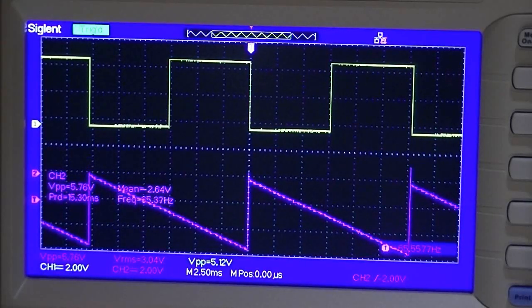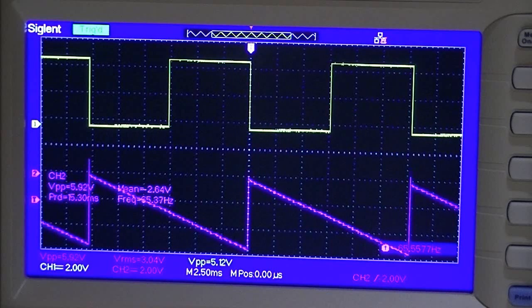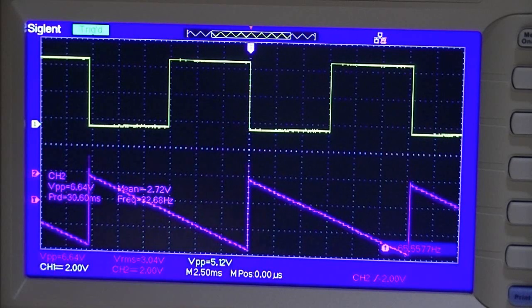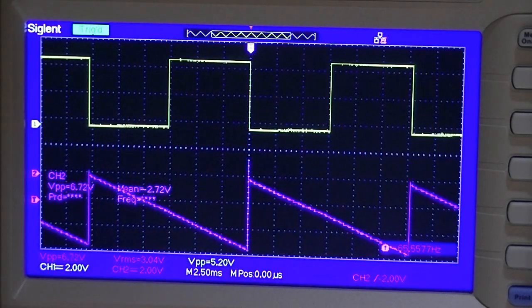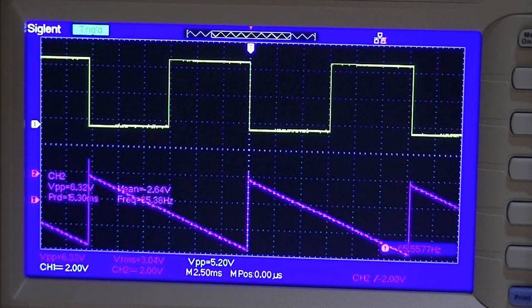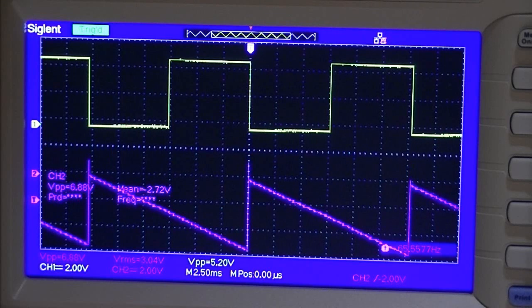Here I am again with another example of a square to triangle converter. The top trace you see there is the input and the bottom trace is the output. I'm driving it with an Arduino Nano that's designed to put out square waves on the frequencies of notes.